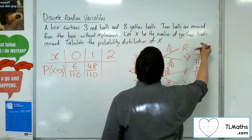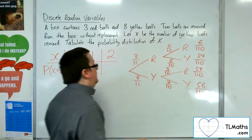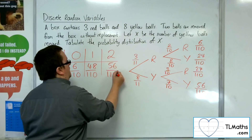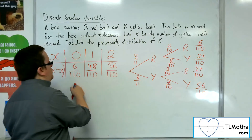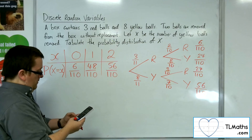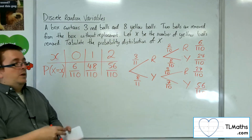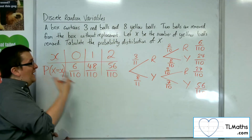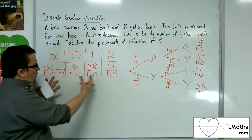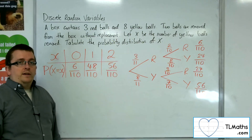So that's six over 110, 48 over 110, and 56 over 110. As a quick check, these three probabilities should add up to one — which they do. That's how we can use a probability tree to piece together what the distribution must look like.